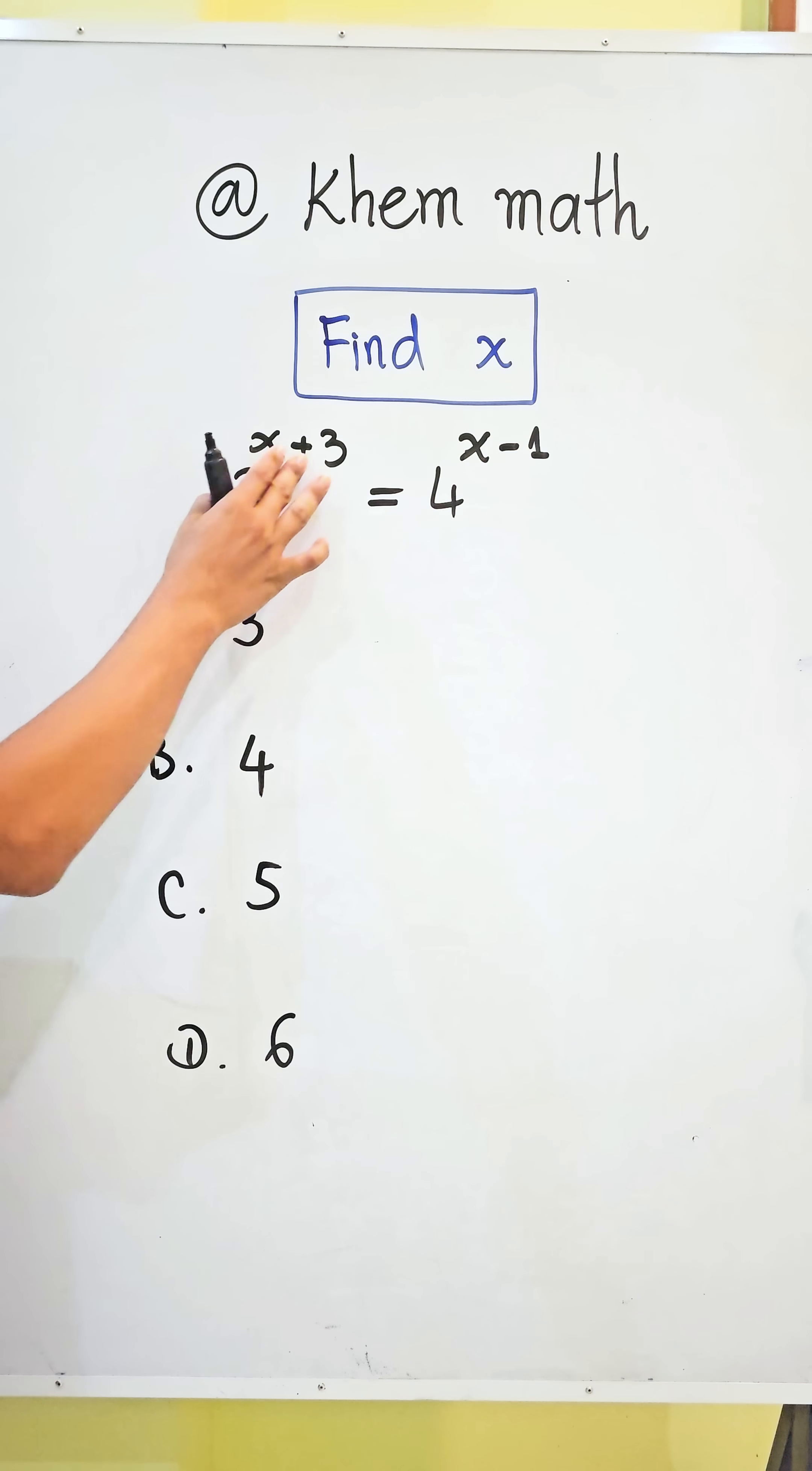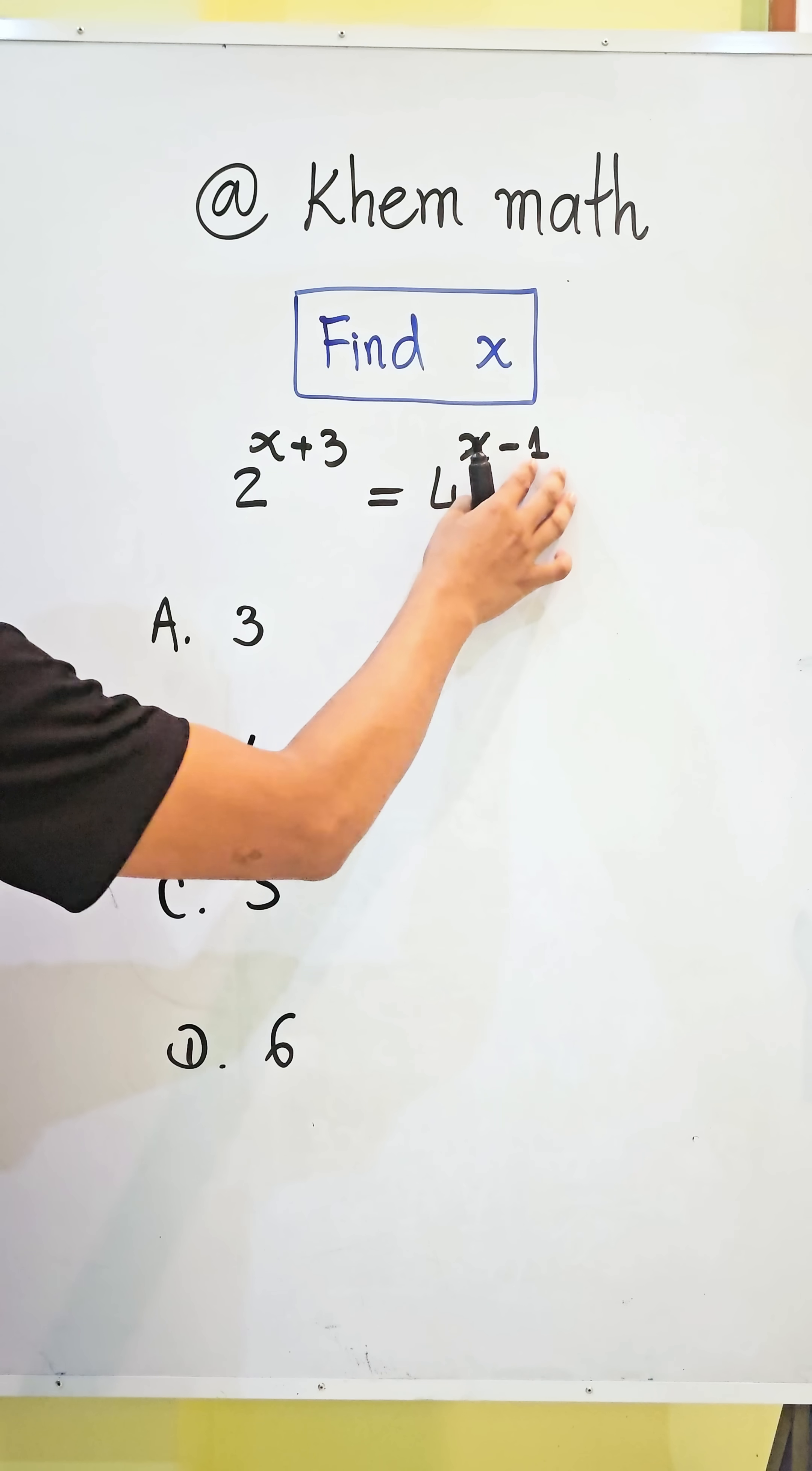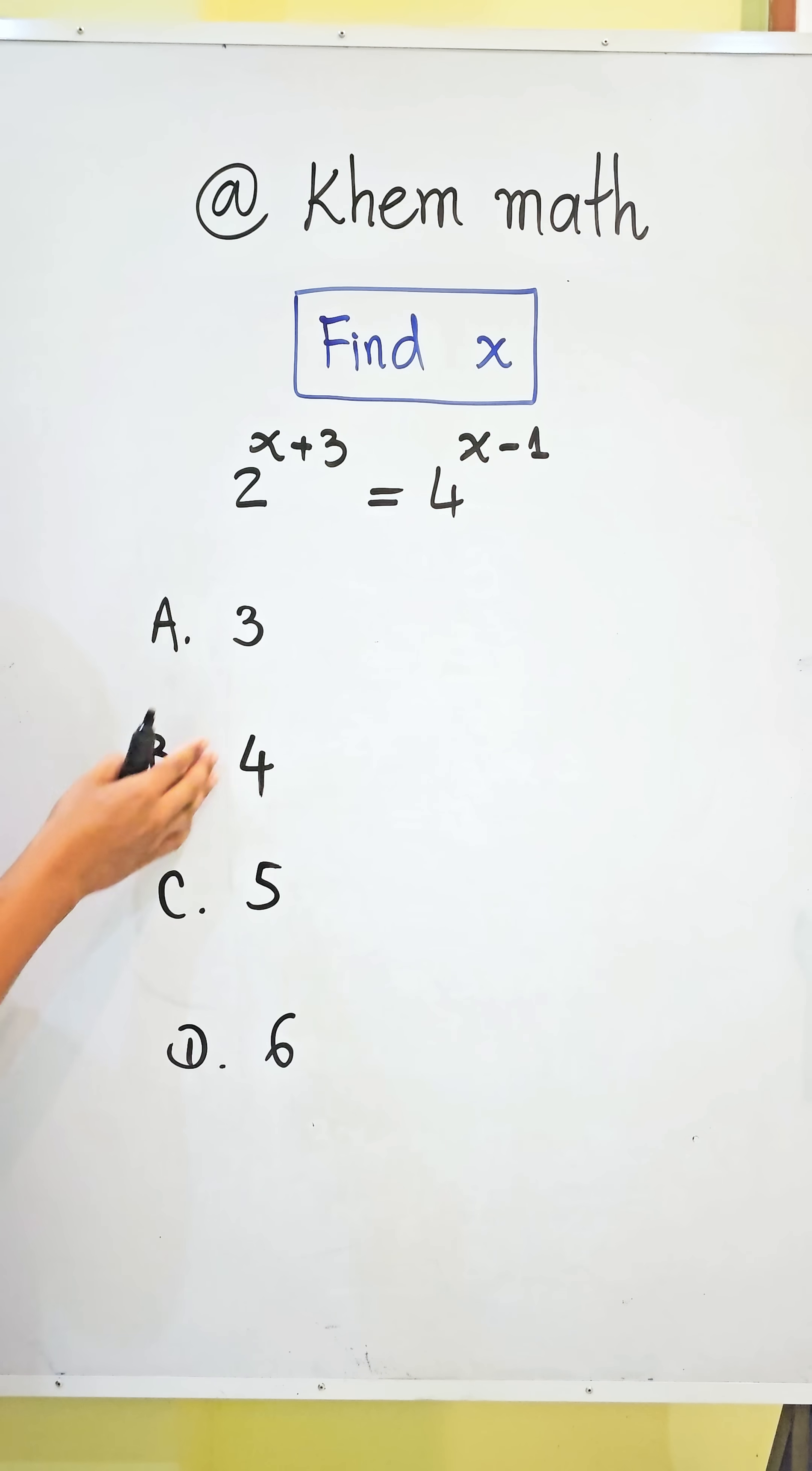2 power x plus 3 equals 4 power x minus 1. The answer options are 3, 4, 5, or 6. Which one of the answers?